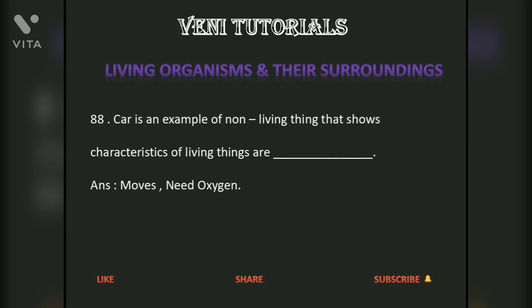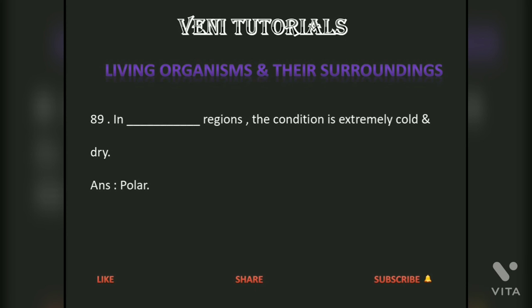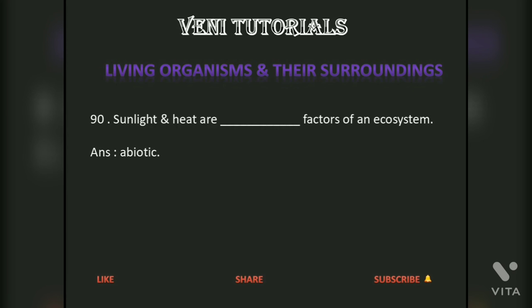A car is an example of a non-living thing that shows characteristics of living things. These are dash. Answer: Non-living things need oxygen. In dash regions, the condition is extremely cold and dry. Answer: Polar. Sunlight and heat are dash factors of an ecosystem. Answer: Abiotic.